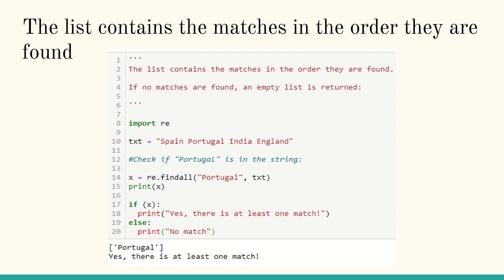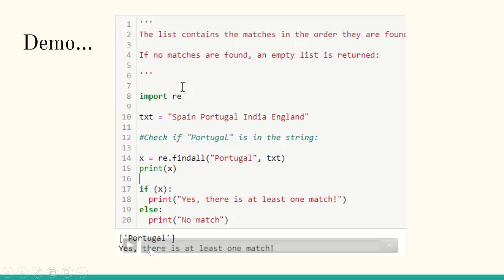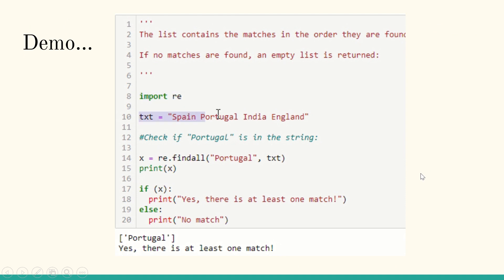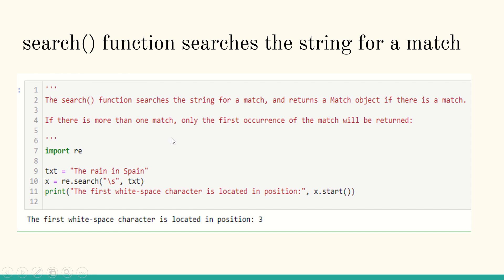findall returns the matches in the order they are found. If no matches are found, an empty list is returned. Here I import re; the text is 'Spain Portugal India England.' I use re.findall('Portugal', text) — Spain is not Portugal, Portugal is Portugal, India is not, England is not. So we get a match found and print 'yes, there is at least one match'; otherwise 'no match.' Portugal is printed and the match is clearly available.